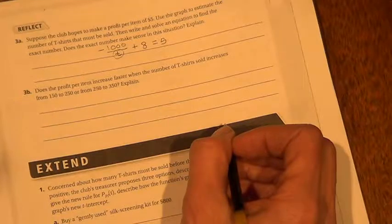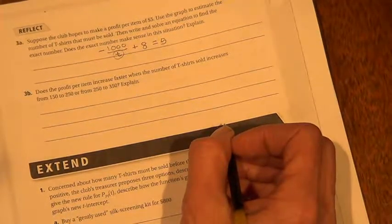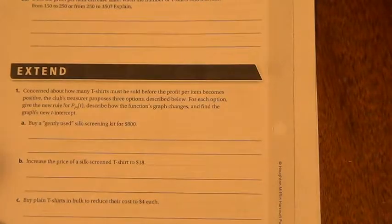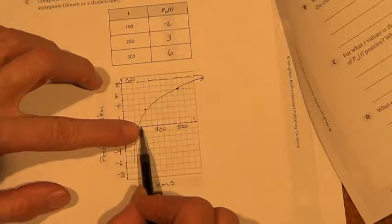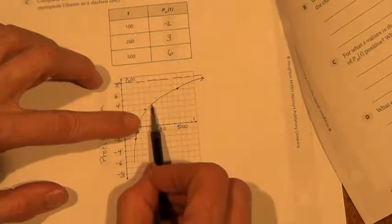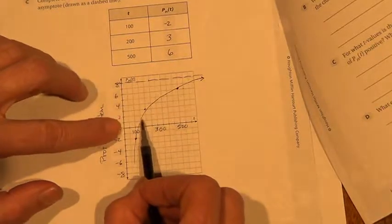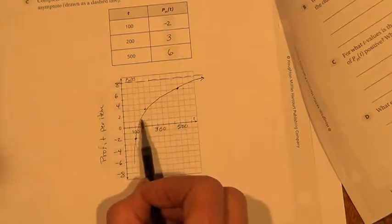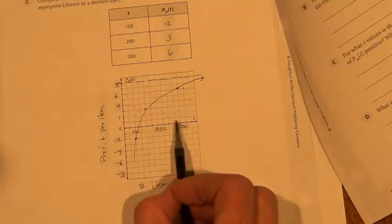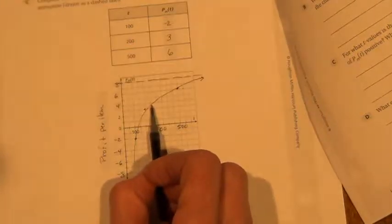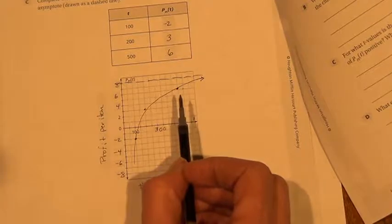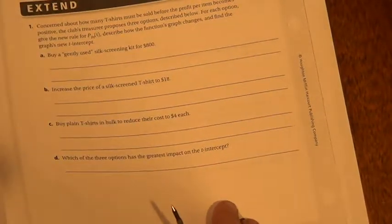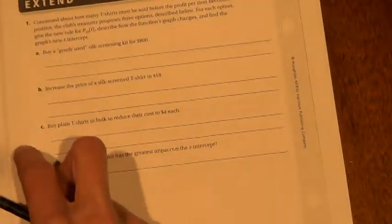Does the profit per item increase faster when the number of t-shirts sold increases from $150 to $250, or from $250 to $350? So we're looking at a range on our graph. They're asking, does it increase faster from $150 to $250? That's about almost $4, and this is about $1. So a $3 increase compared to $250 to $350, compared to almost $4, up to a little over $4. So about a dollar increase. So I guess you already know that they're quite different, and you know which one increases faster, so put that in your own words.